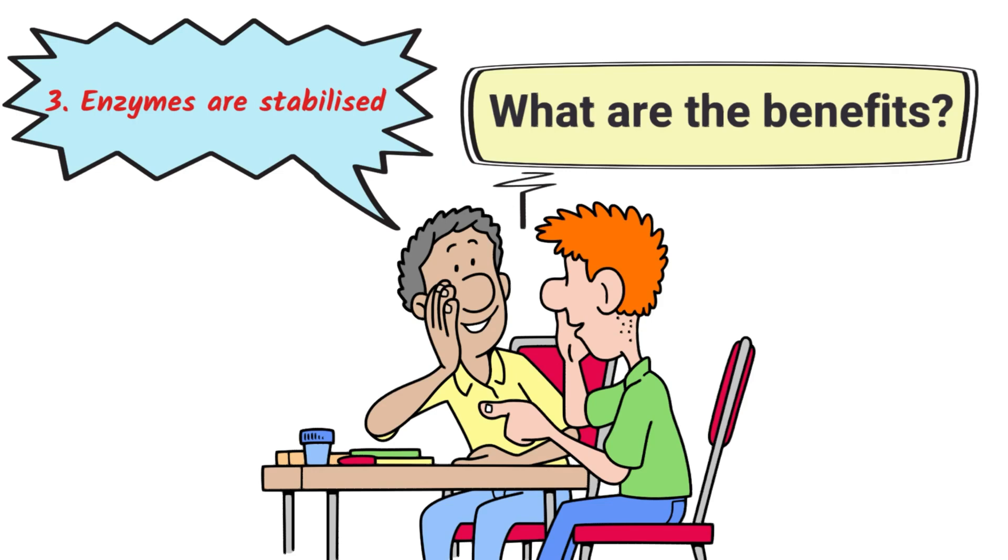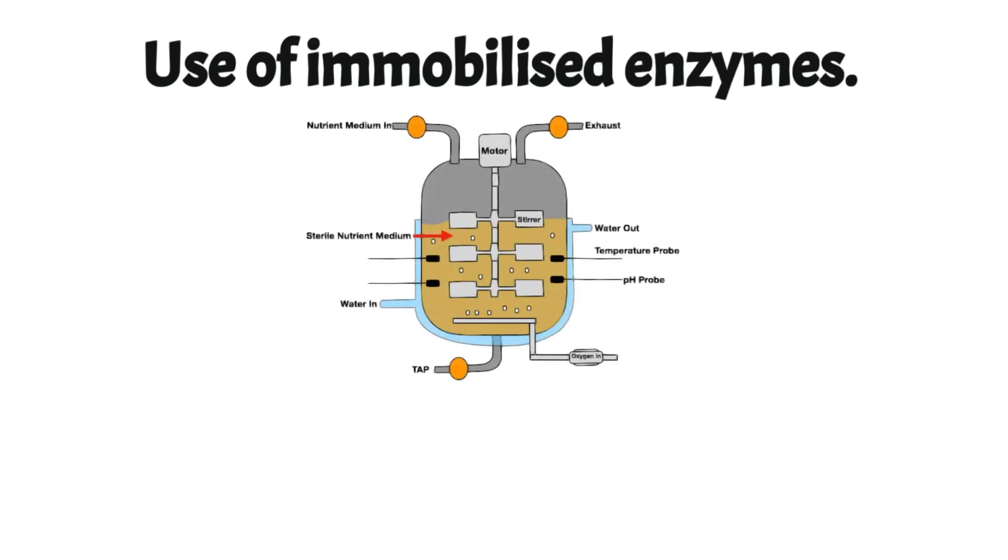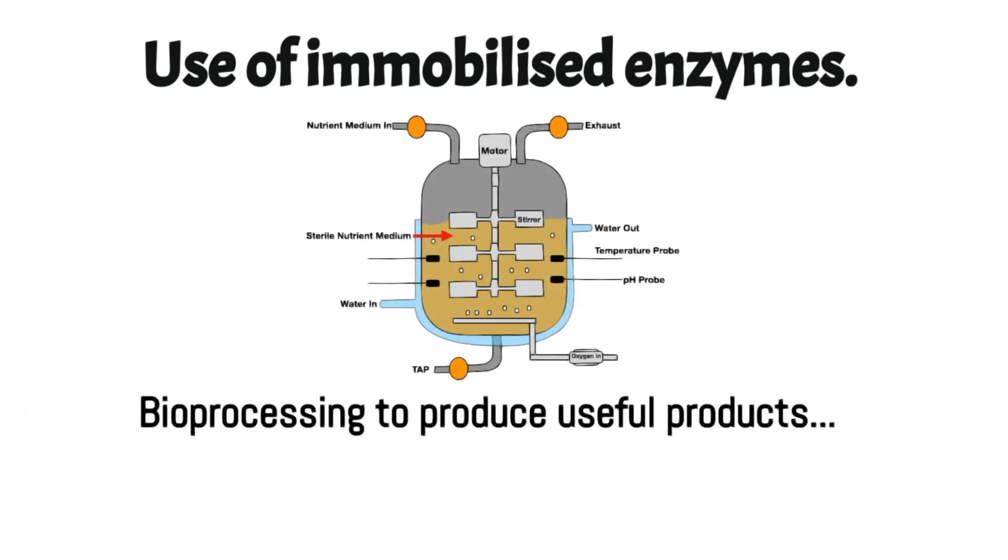How are immobilised enzymes used? There are hundreds of different types used in bioprocessing to produce useful products such as lactose-free milk. Different medicines are produced by immobilised enzymes, and also fructose, that very sweet monosaccharide.